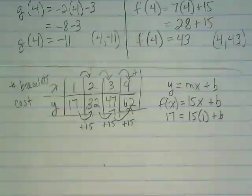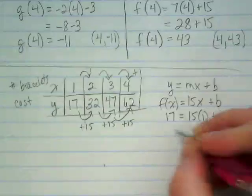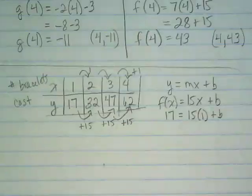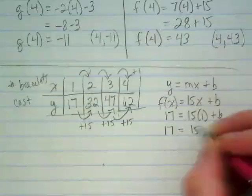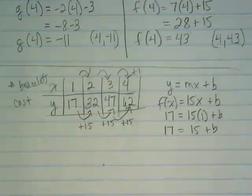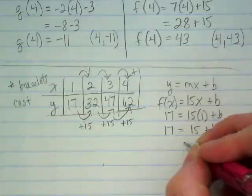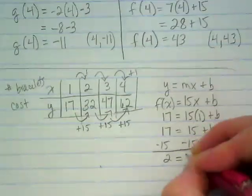Because I want to find out what that plus b is. I think I have a suspicion, because I know how much more it's costing for just 1 than it is for 2, right? But let's solve for it. What's 15 times 1? So this is 17 equals 15 plus b. If I want to solve for the b, I'm going to subtract away the 15. And I get 2 equals b.